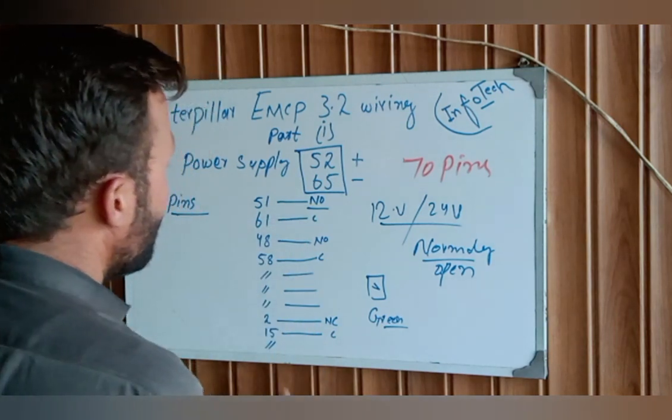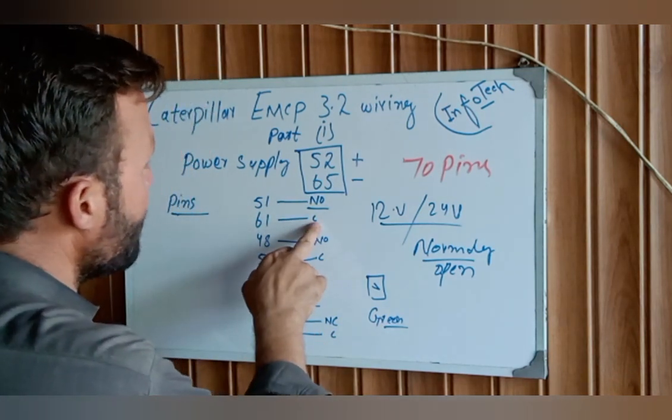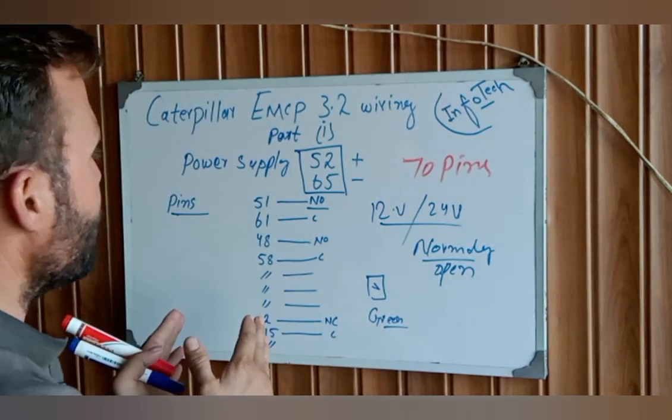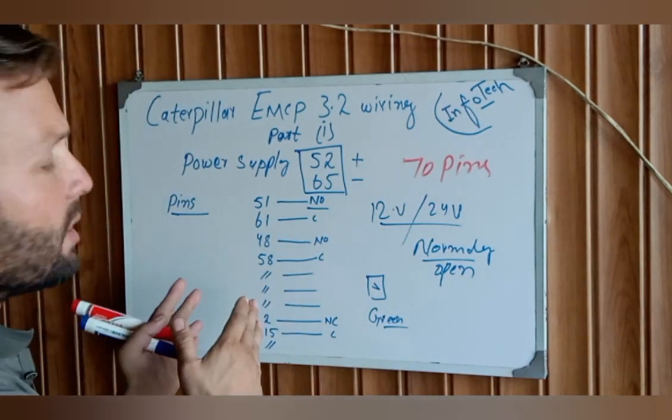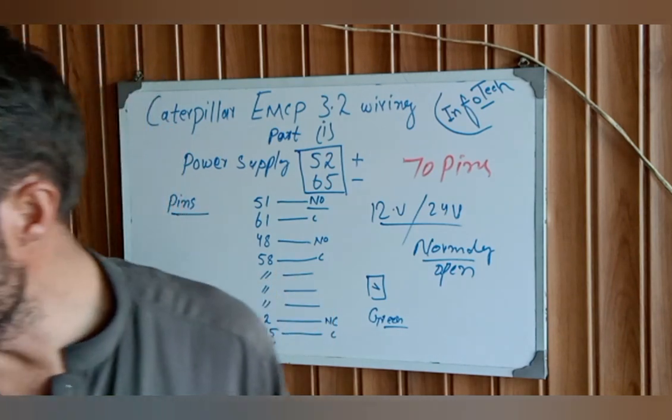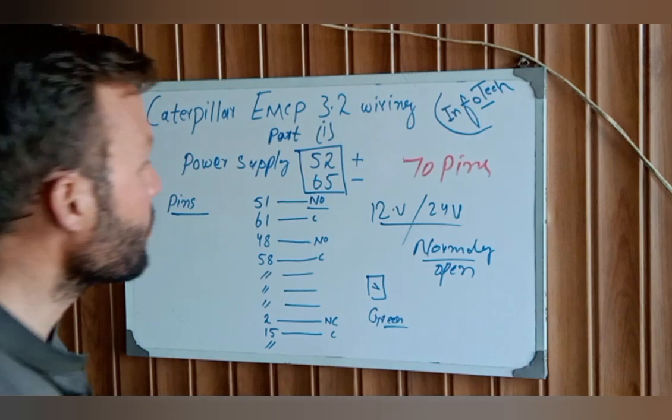NO means normally open and C means common. How to wire the starter motor, how to wire the fuel stop and fuel turning on solenoid - let me explain.